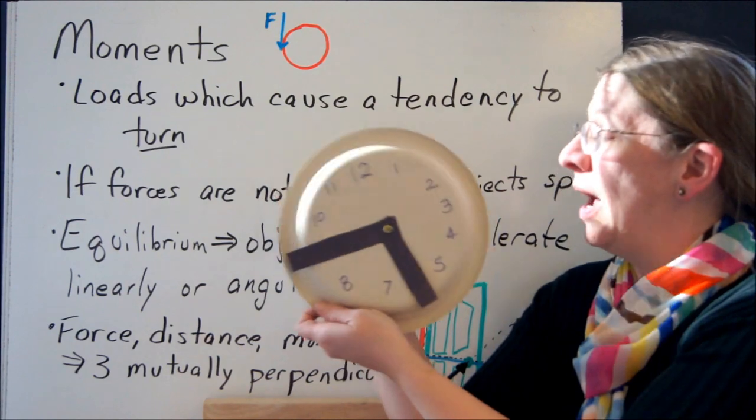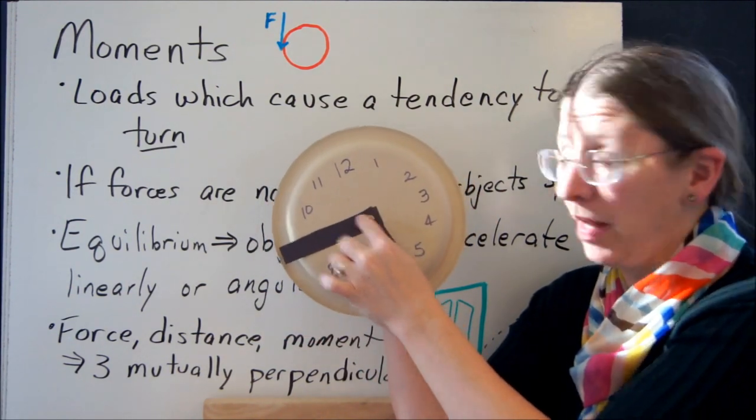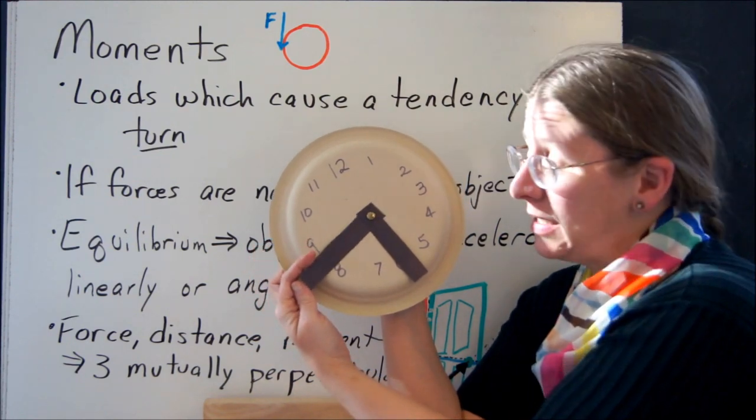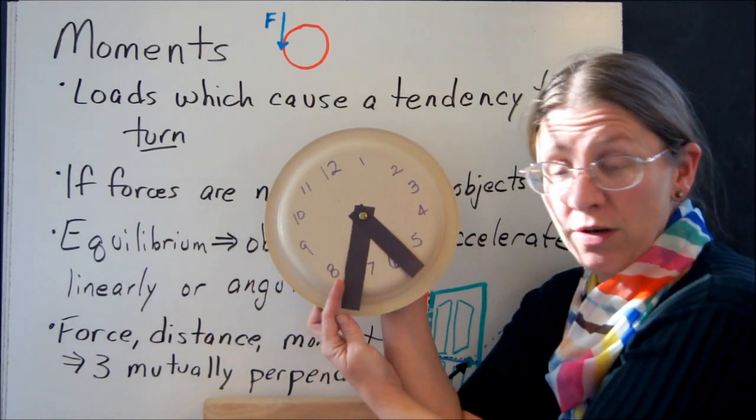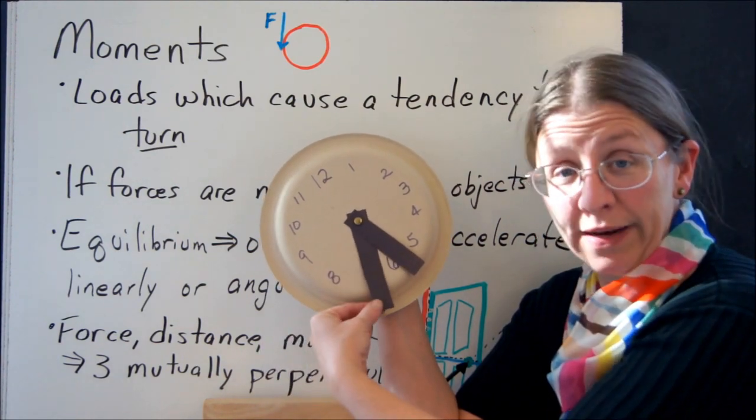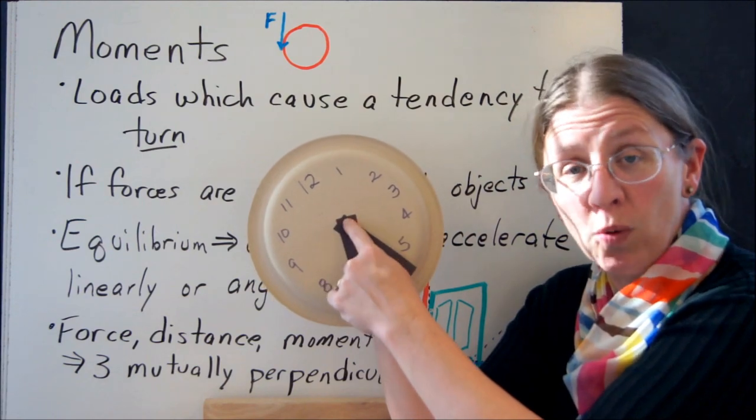When you did this, you had acting at the middle. That's the point we're going to keep talking about. A force that acts on the edge here causes a tendency for this hand to turn. So I'm going to push on the little minute hand, and the arm turns. But it turns about that point.